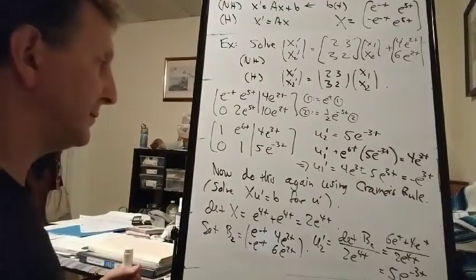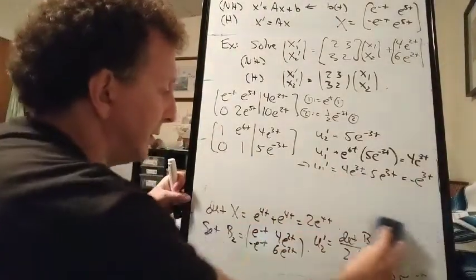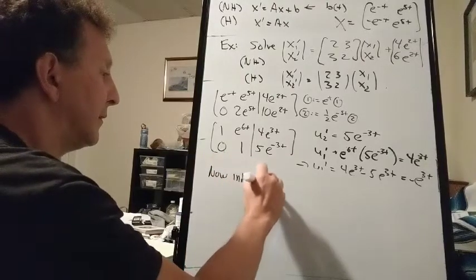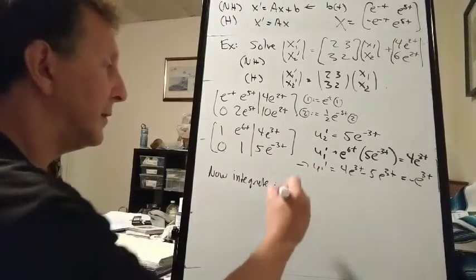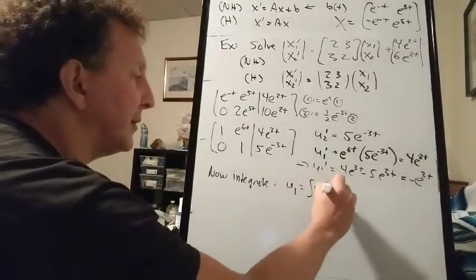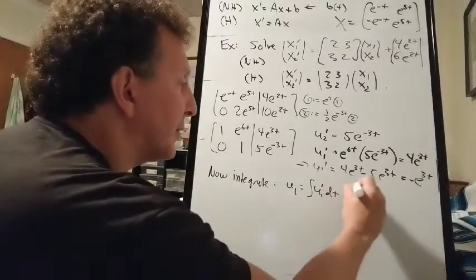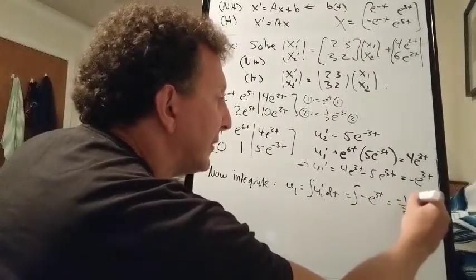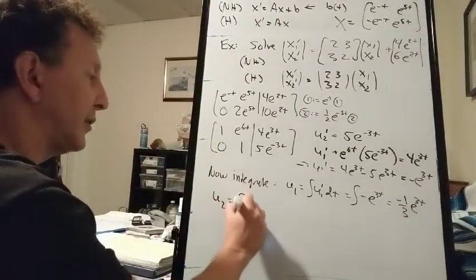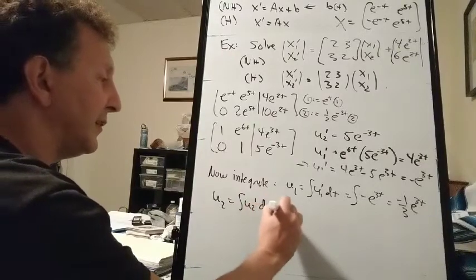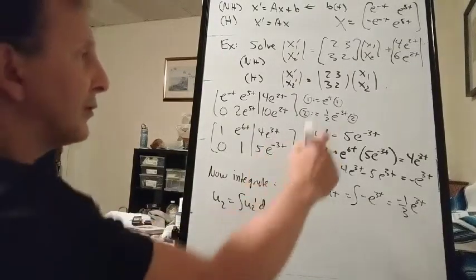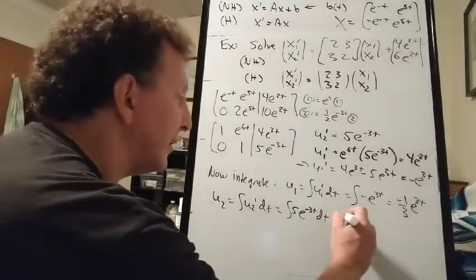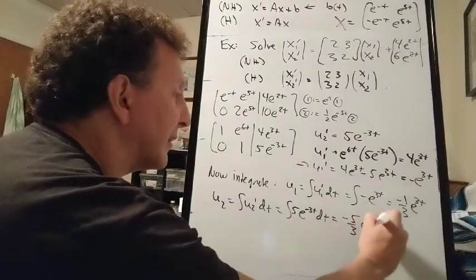Now we integrate. U1 is the integral of u1 prime dt, with constant of integration zero: U1 = −(1/3)e^{3t}. U2 is the integral of 5e^{−3t} dt, with constant of integration zero: U2 = −(5/3)e^{−3t}.